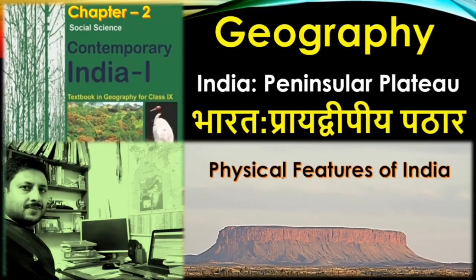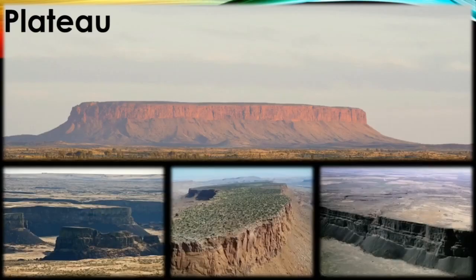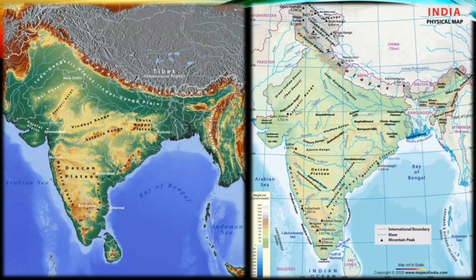Let us start with the third physical feature of India, that is Peninsular Plateau. The Peninsular Plateau is a tableland topography composed of old crystalline, igneous and metamorphic rocks. India is called the Indian Peninsula because the Indian landmass is surrounded by water on three sides — East: Bay of Bengal, West: Arabian Sea, and South: Indian Ocean. Three sides water and one side land is known as Peninsular.